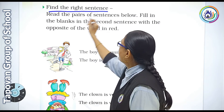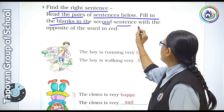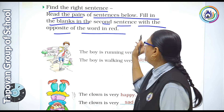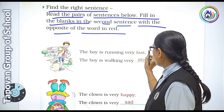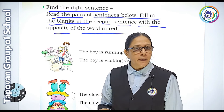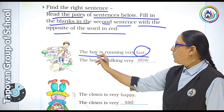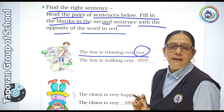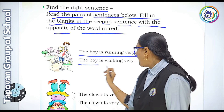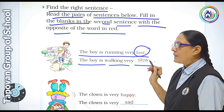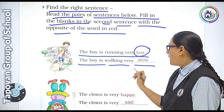Find the right sentence. Read the pairs of sentences below and fill in the blanks in the second sentence with the opposite of the word in red. The boy is running very fast — the opposite is: the boy is walking very slow.